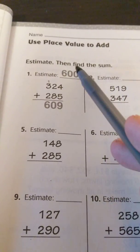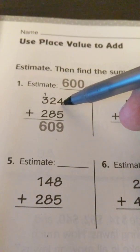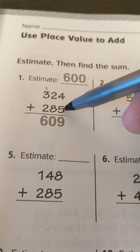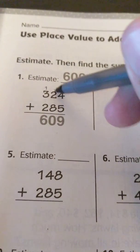Basically what they did to find this estimate here was they rounded the two addends 324 and 285 to the nearest hundred. So to round to the nearest hundred you need to make sure you look at the tens place.